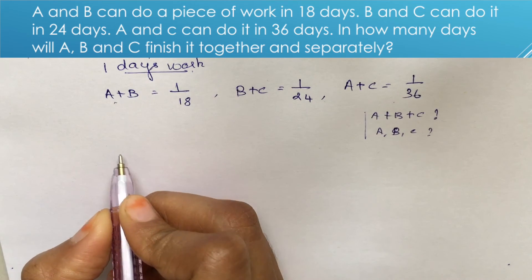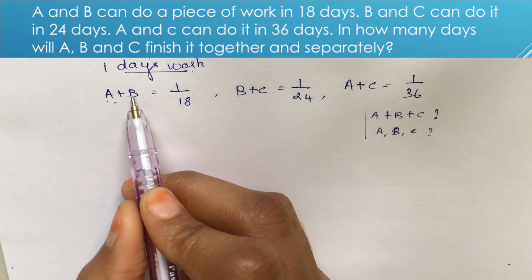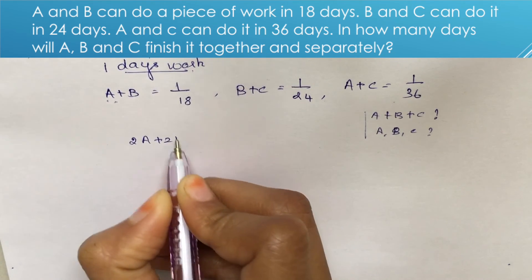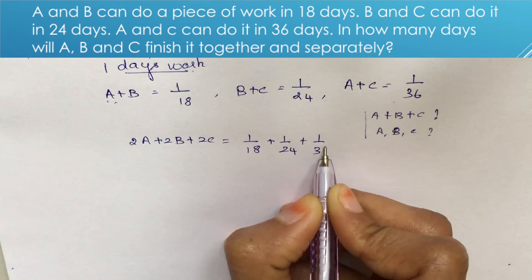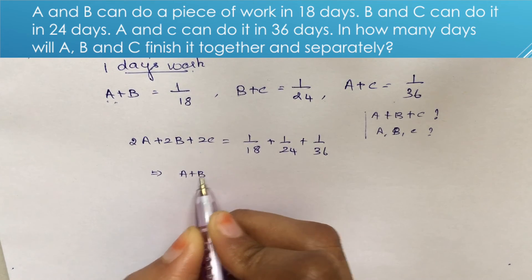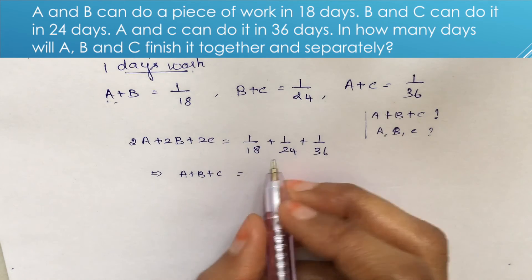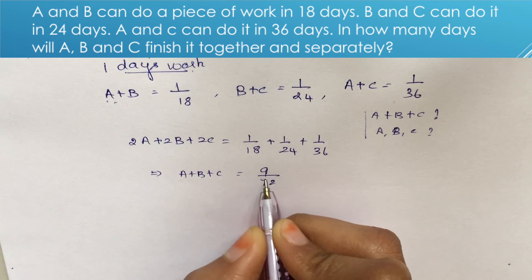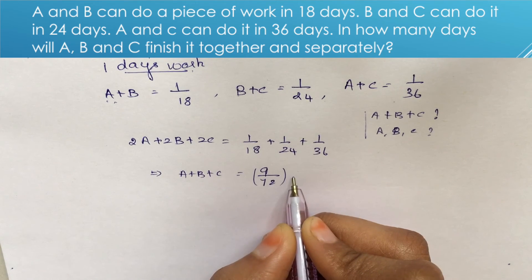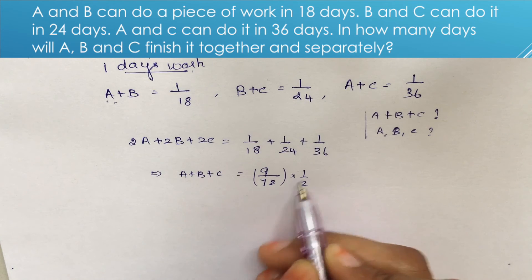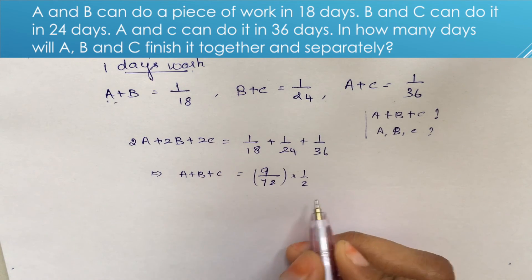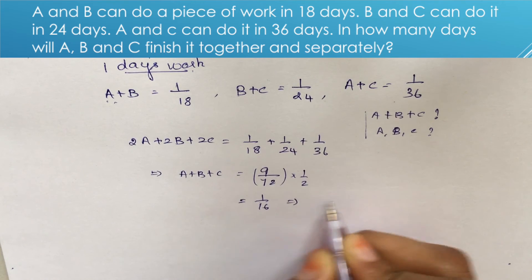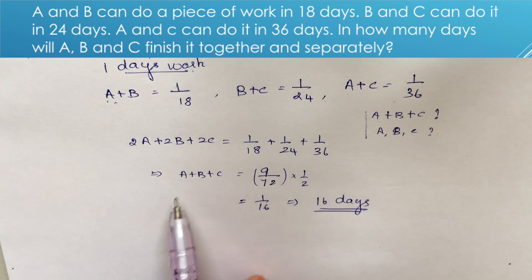Adding all three equations: 2A + 2B + 2C = 1/18 + 1/24 + 1/36 = 9/72. So A + B + C = 9/72 divided by 2 = 1/16, which means A, B, and C together take 16 days to complete the work.